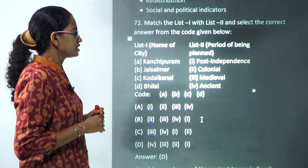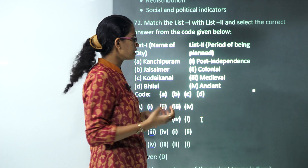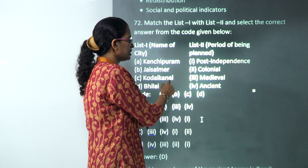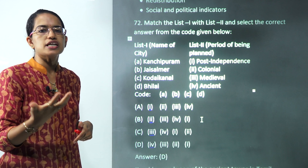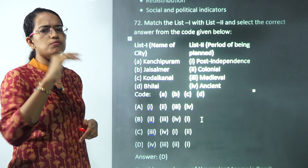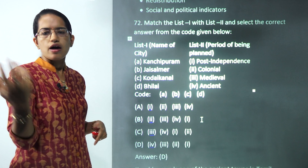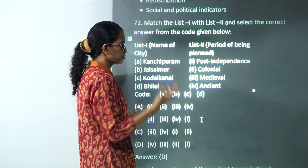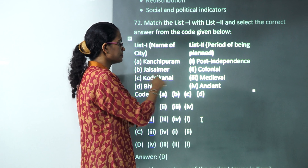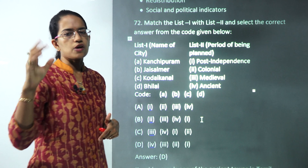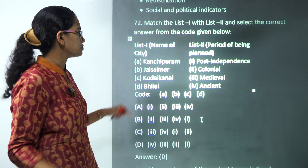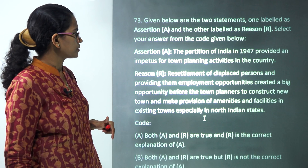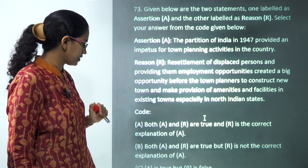The next question matches cities with their planning periods. Bhilai was developed as a steel plant post-independence. Kodaikanal was developed during the colonial British period as a hill station. Kanchipuram is an ancient town in the Tamil region. Jaisalmer is a medieval town — along with Jodhpur, these are considered medieval towns. Those are the correct matches.